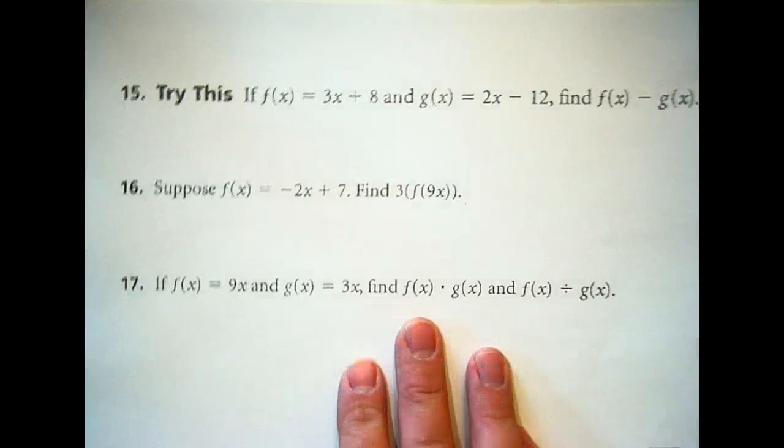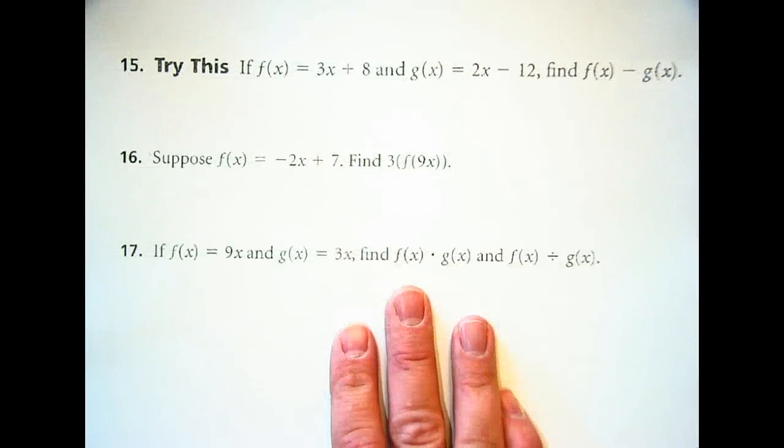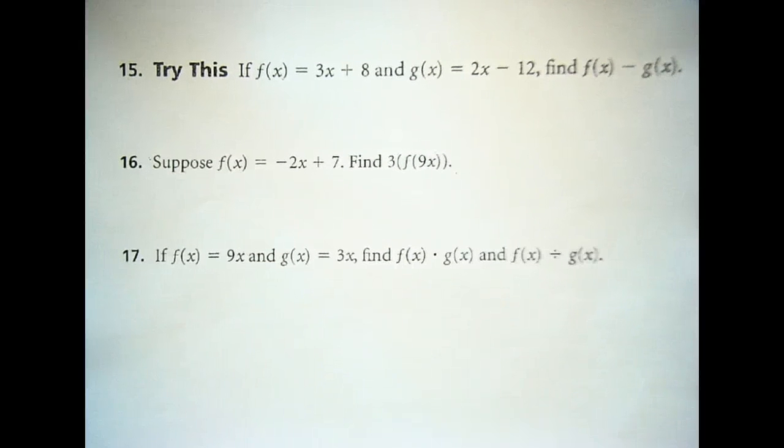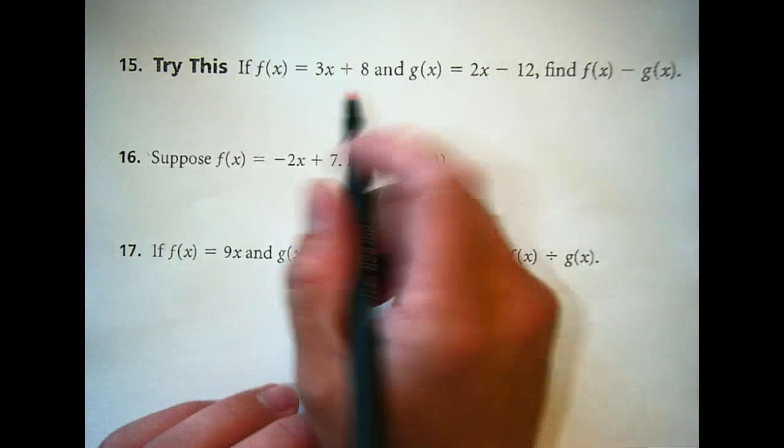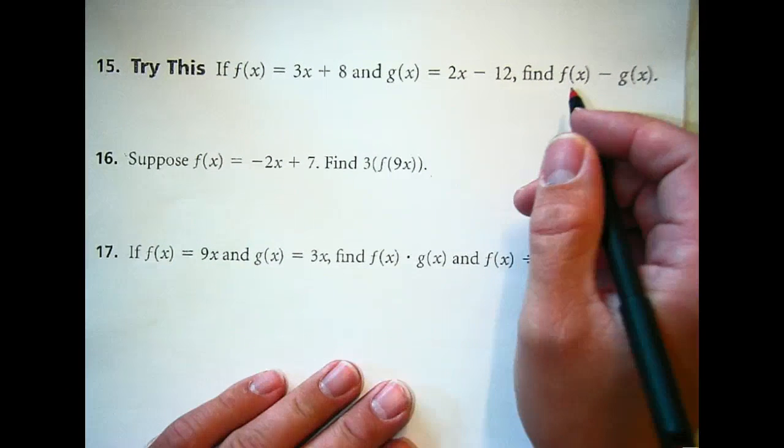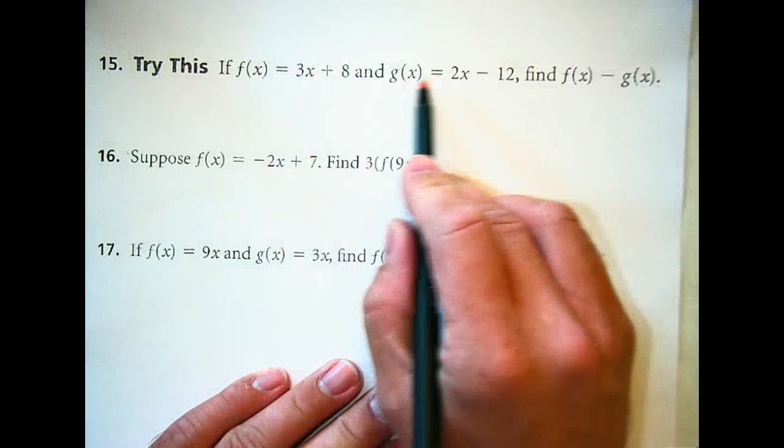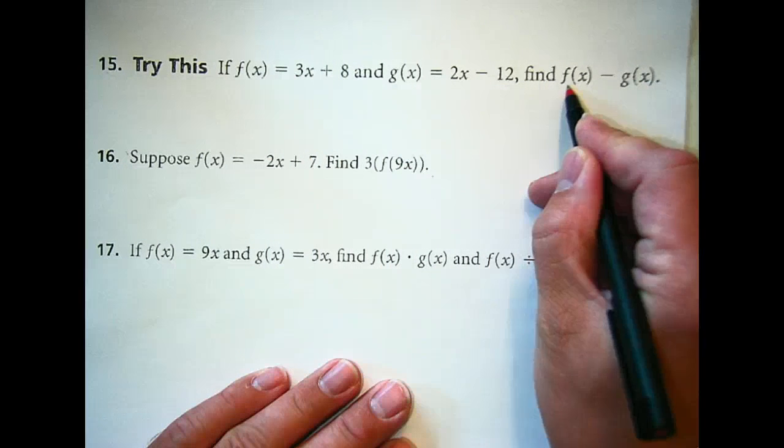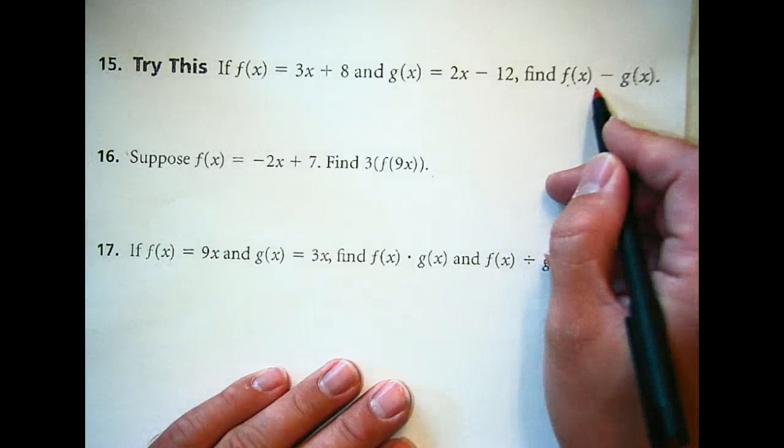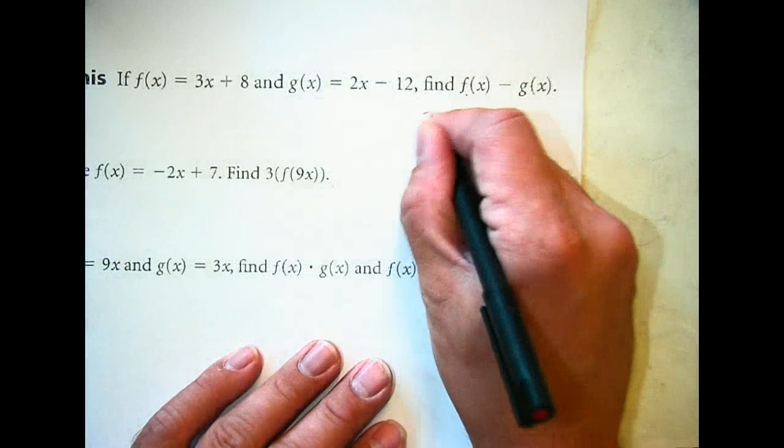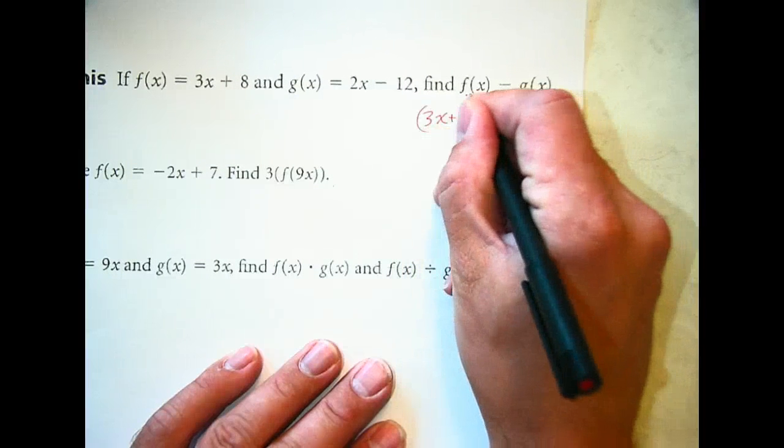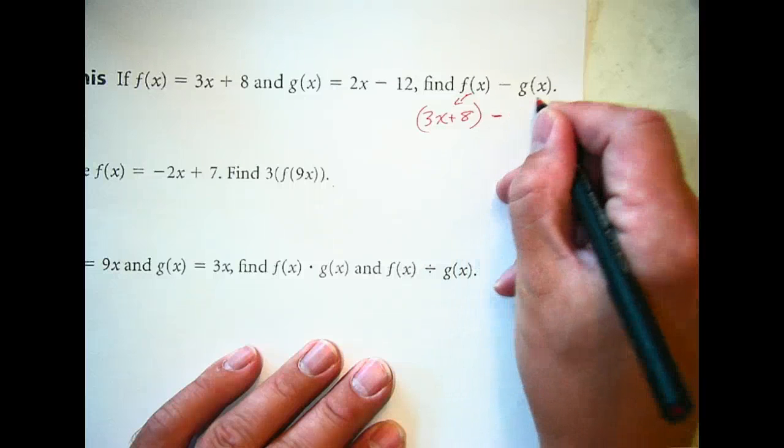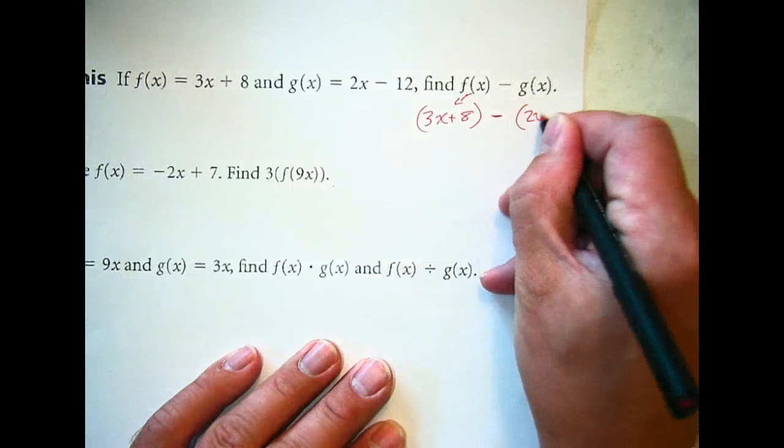I'm going to be handing out your assignment. While I'm handing out your assignments, I want you to complete problems 15 and 16 up there, please. Some of you are going to make the mistake here, so let's talk about this one. If I have f(x) = 3x + 8 and g(x) = 2x - 12, I want to subtract g(x) from f(x). So I'm going to take my 3x + 8 and substitute it in for f(x), so that became that. And I'm going to subtract my 2x - 12.